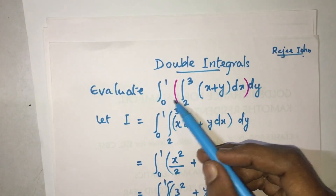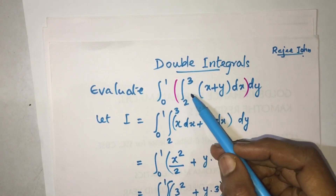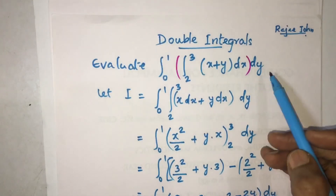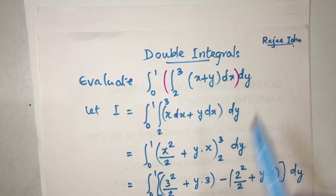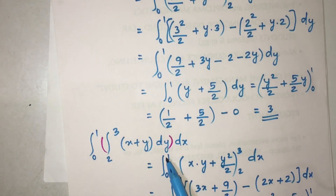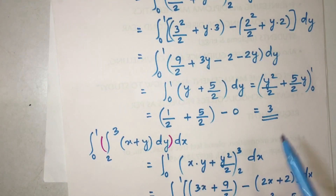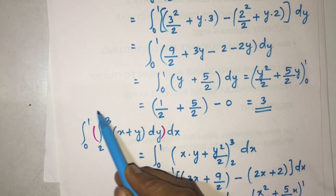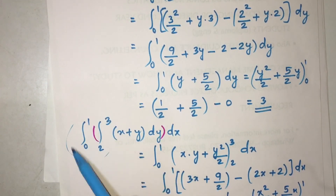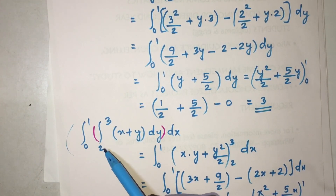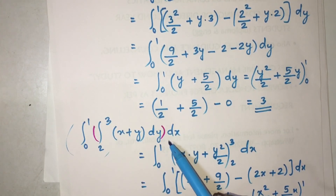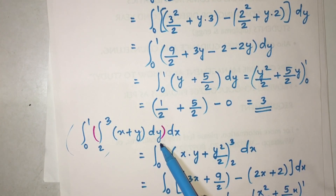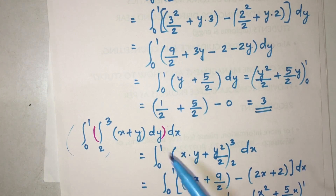Both the limits being constant numbers, I did the same integral with dx dy and also with dy dx. Both answers we got as 3. So be careful — if the limits of integration have some variables, then you cannot change the order of integration.